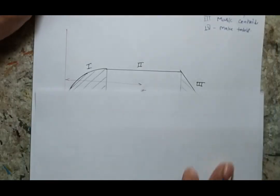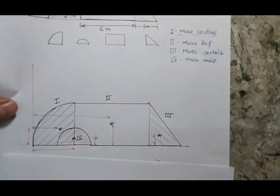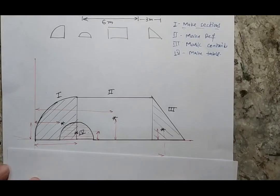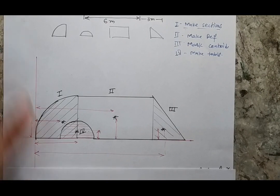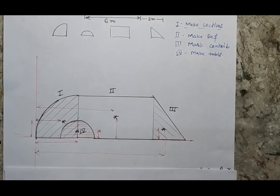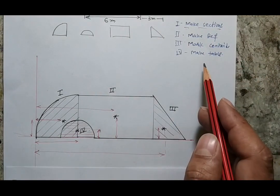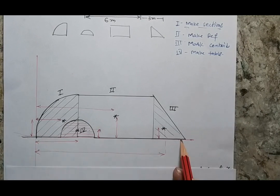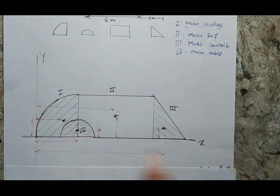Here I am following this step by step. The first job is to mark the different sections. Here I am showing four different sections. Once I make the sections, my second job is to make references. I am taking the bottom and extreme left as the references, defined by the XX reference and YY reference.